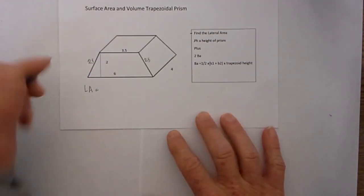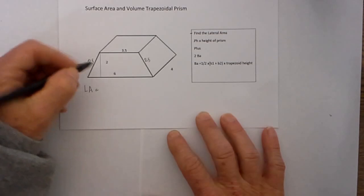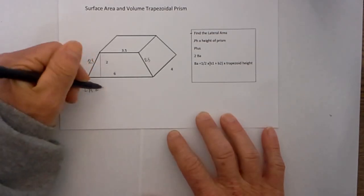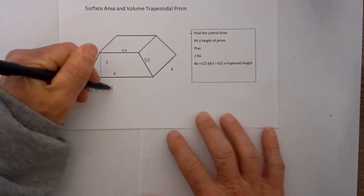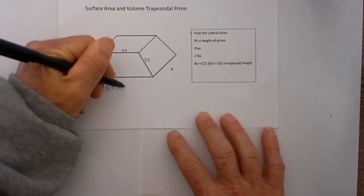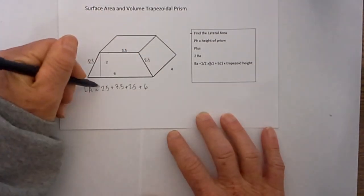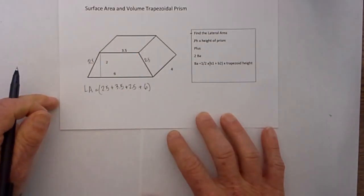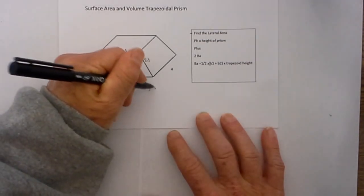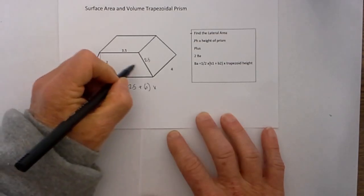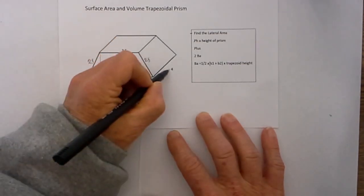Let's go ahead and start with the lateral area. The first thing we need to do is find the perimeter and that is given. So the perimeter will equal 2.5 plus 3.5 plus 2.5 plus 6. Then after we add these together we will multiply that times the height of the prism which is the distance between the two bases which is given and that is 4.